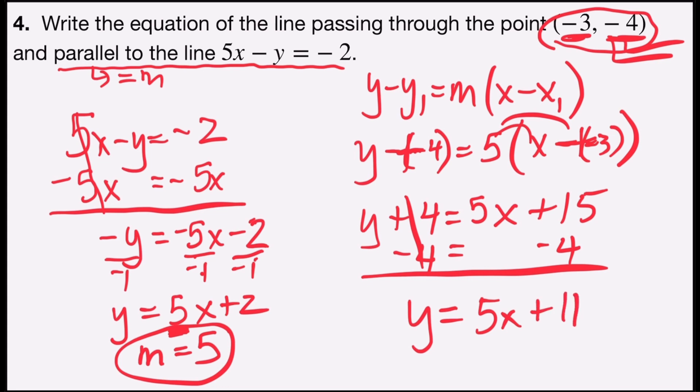And so the equation of the line parallel to the given line passing through the point would be y = 5x + 11.